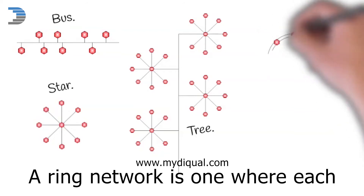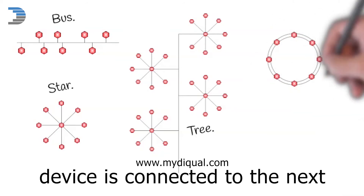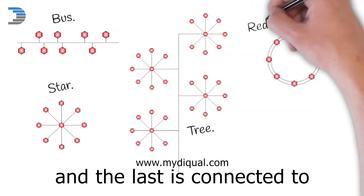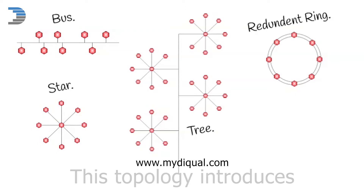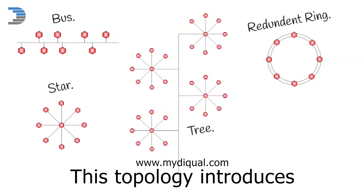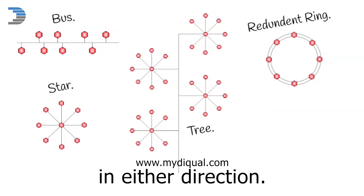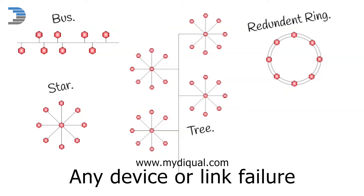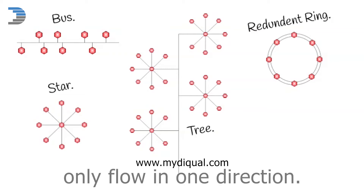A ring network is one where each device is connected to the next, and the last is connected to the first. This topology introduces redundancy in itself because data can travel in either direction. Any device or link failure will mean that the data will only flow in one direction.